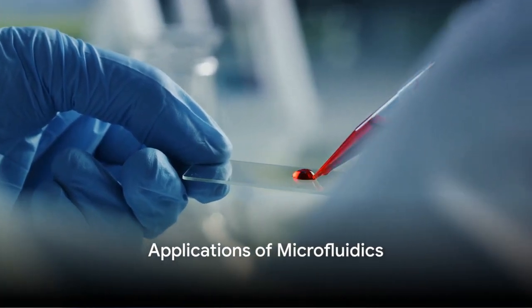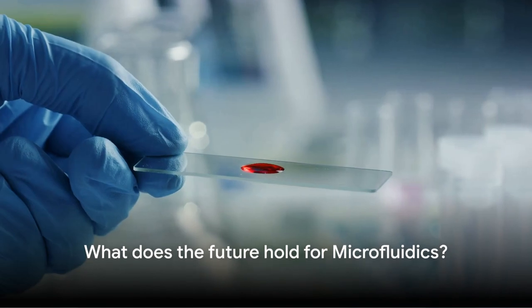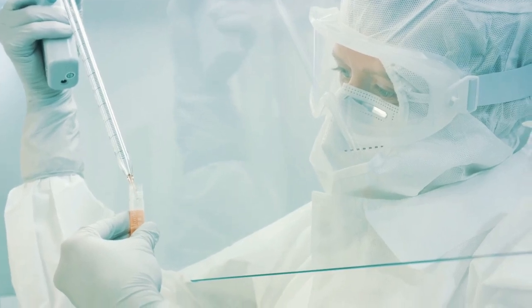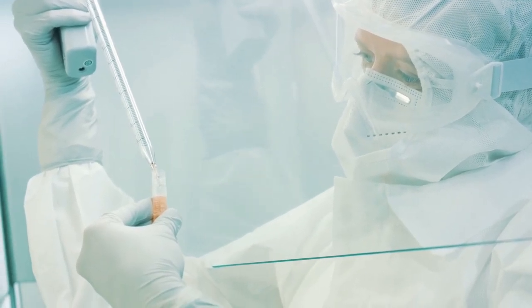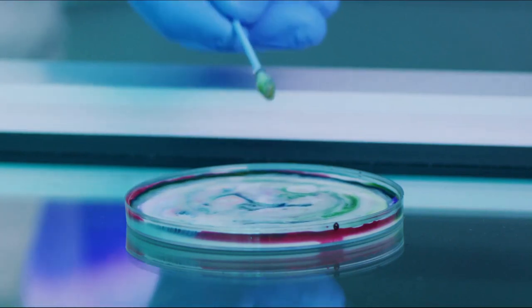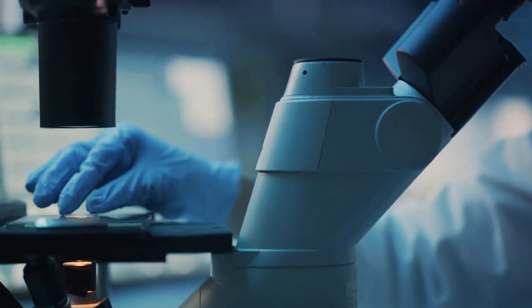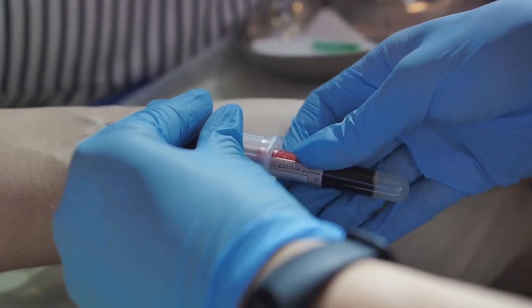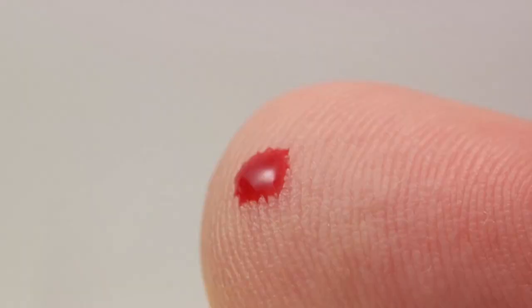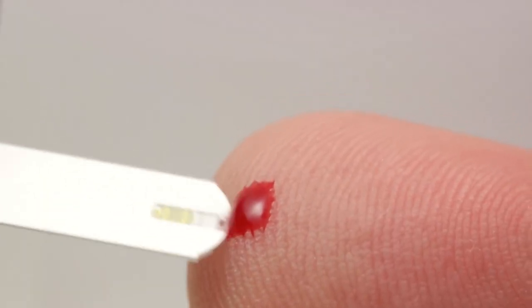Microfluidics has a broad range of applications, spanning from medical diagnostics to environmental monitoring. Let's kick off with medical diagnostics. Imagine a world where a simple droplet of blood could tell you everything you need to know about your health. That's the promise of microfluidics. The field is pioneering the development of lab-on-a-chip technologies. These devices integrate several laboratory functions onto a single chip of just millimeters to a few square centimeters in size. This allows for quick, efficient, and cost-effective diagnostic tests. An example of this is the glucose testing strips used by diabetics. These strips utilize microfluidic channels to direct a small sample of blood to a testing area, giving an accurate reading of blood sugar levels in seconds. This is a game-changer for chronic disease management.